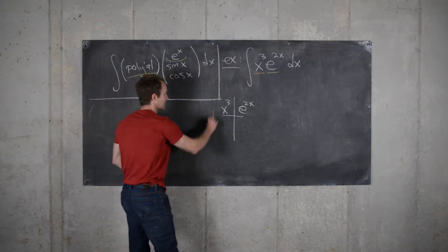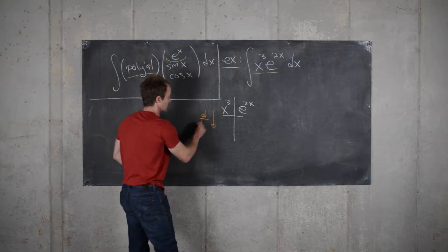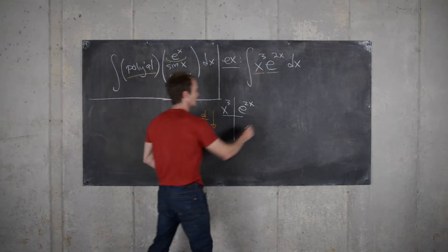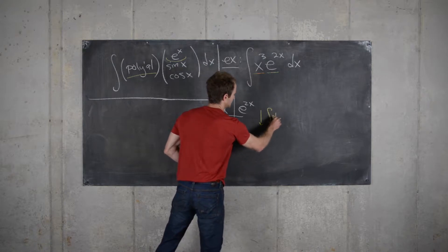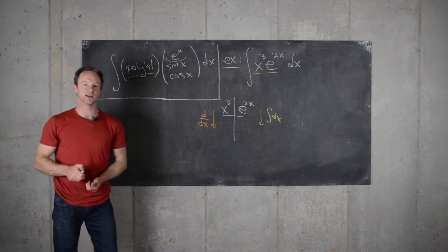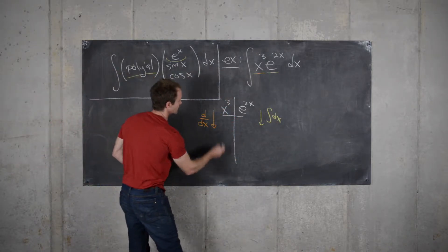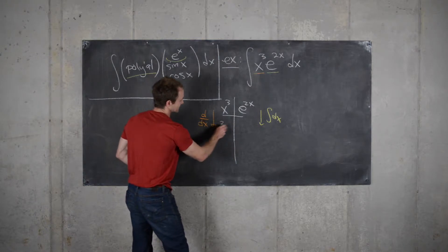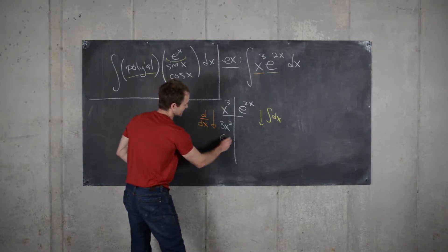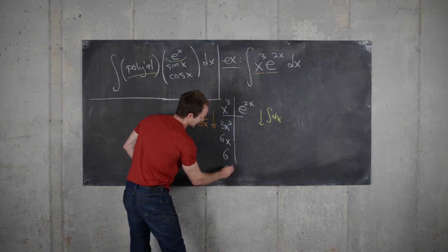And then we'll take derivatives down this side of the table and we'll take anti-derivatives down this side of the table. So here we get, this will be obviously 3x squared, 6x, 6, and 0. Obviously once we hit 0, it's always going to be 0 after that.